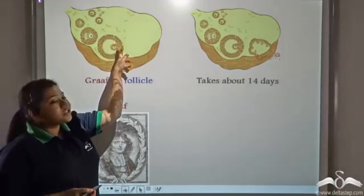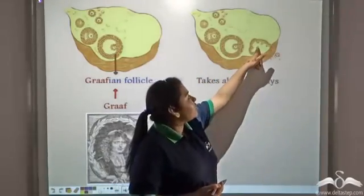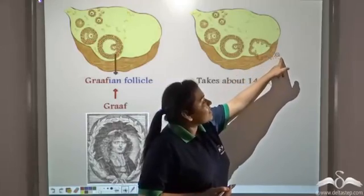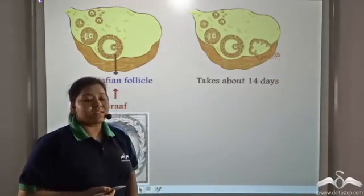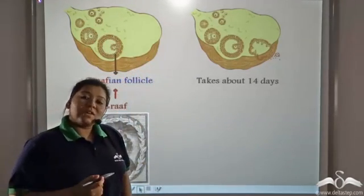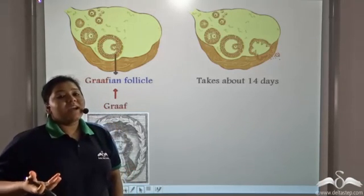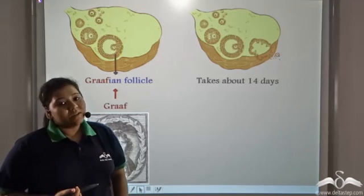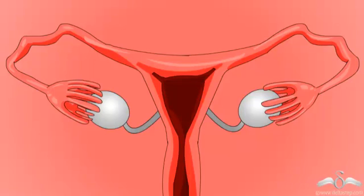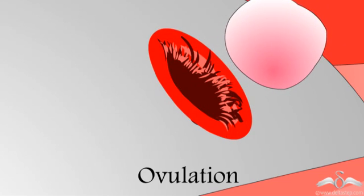After the Graafian follicle matures and ripens, it ruptures and the matured ovum is released out of the ovary on the fourteenth day. This entire maturation process takes about fourteen days, and on the fourteenth day the matured ovum is released. This process, when the walls of the ovary rupture and the matured ovum is released, is known as ovulation.